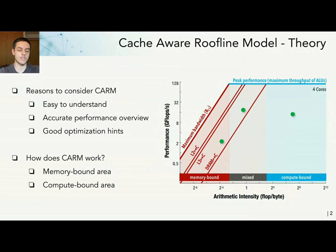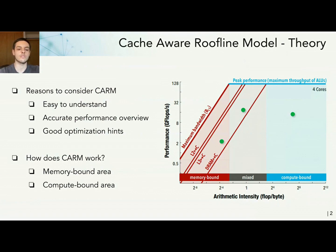How does the CARM work? Basically, the CARM is composed of two main roofs: a sloped roof and a flat roof. The sloped roof has various roofs related with the maximum bandwidth of each memory level of your system, and the flat roof is related with the peak arithmetic performance of your CPU.